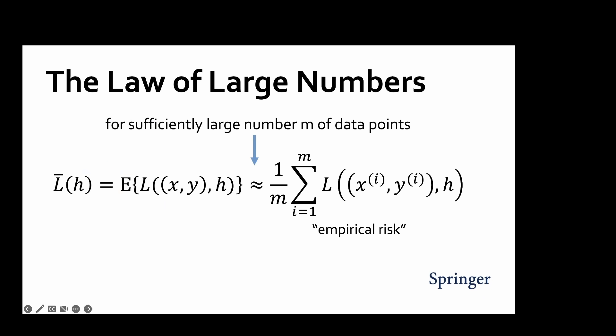Since the loss values for individual data points are IID realizations of random variables, we can use their average to estimate their expectation. A key result of probability theory known as the Law of Large Numbers states that the average loss converges to the expected loss as the number of data points is growing.